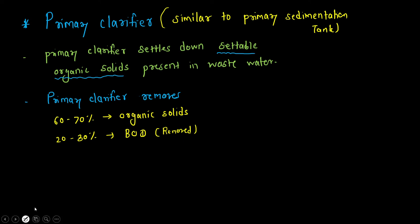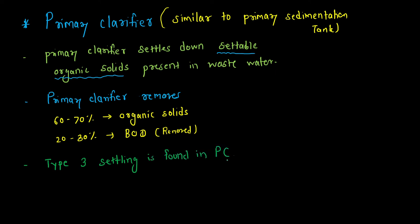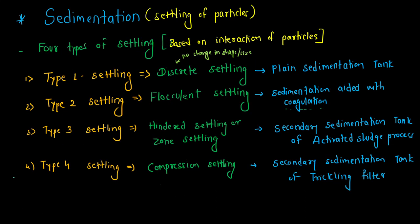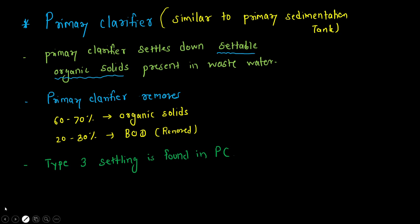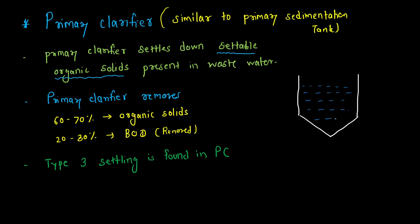The type of settling seen in the primary clarifier is Type 3 settling — called hindered settling or zone settling. In the primary clarifier, sewage is present and allowed to settle. The concentration of organic impurities is higher compared to discrete particle settling. Due to this high concentration, there is inter-particle interaction, or hindrance, between the particles.